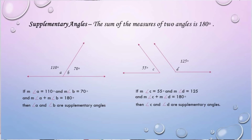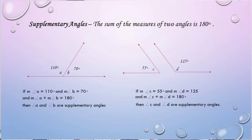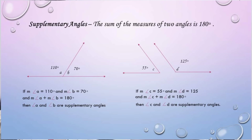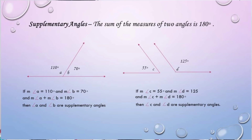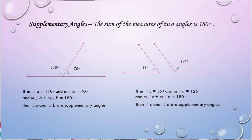Same with this example — if the measure of angle A is 110 degrees and the measure of angle B is 70 degrees, and the measure of angle A plus the measure of angle B is equal to 180 degrees. Also, if the measure of angle C is 55 degrees and the measure of angle D is 125 degrees, and their sum equals 180 degrees, then angle C and angle D are supplementary angles.